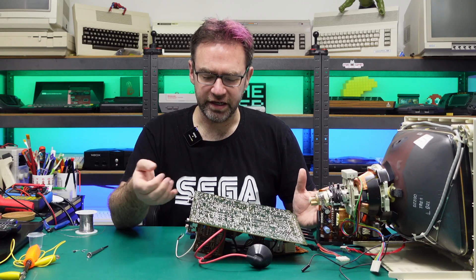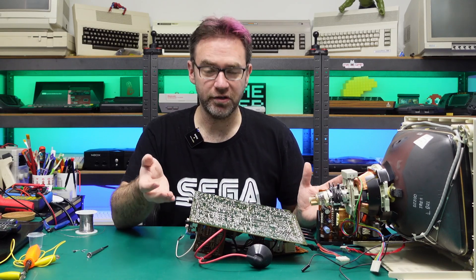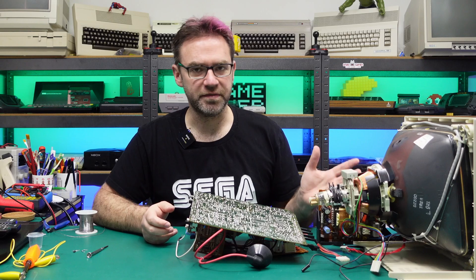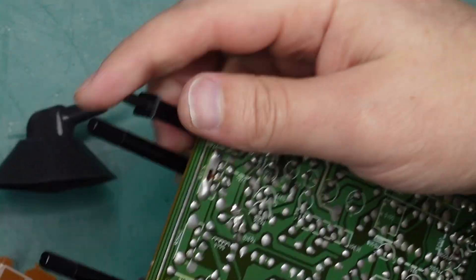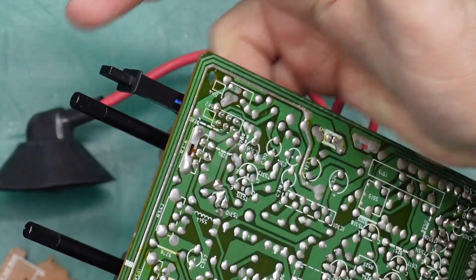The only other real thing on SCART is the fast blanking, now you don't actually have to worry about it on this monitor because it has a button for switching on and off the RGB.